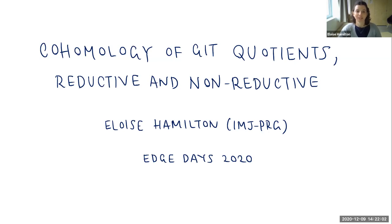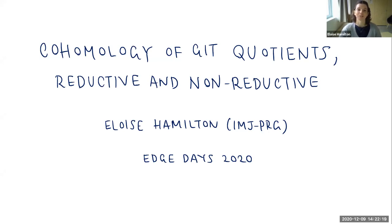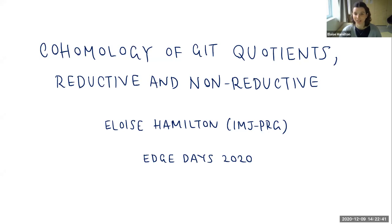When we think about classical GIT, we think of it as a powerful theory for constructing moduli spaces in algebraic geometry, but it's also a very powerful theory for studying the geometry of moduli spaces which can be constructed as GIT quotients. The idea is that if a moduli space can be constructed as a GIT quotient, then often its geometry can be described in terms of the geometry of the parameter space, which is often much easier to describe. The main idea I want to convey is that non-reductive GIT has the same feature.